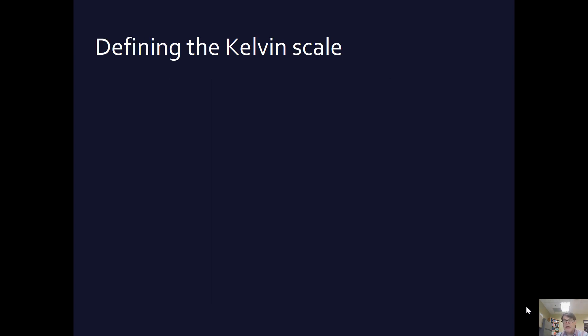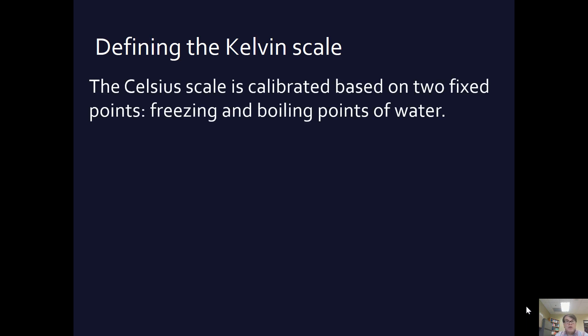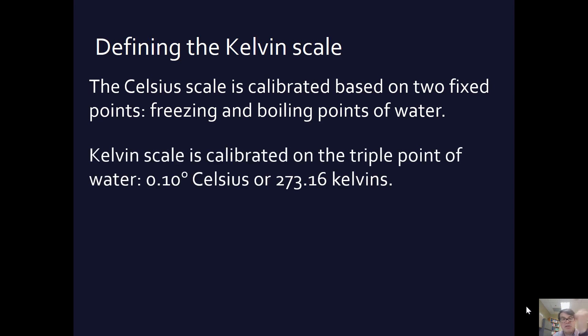So, how is the Kelvin scale defined? Well, you'll remember that the Celsius scale was calibrated by zero and 100, the freezing and boiling points of water. We need two points to define the Celsius scale.